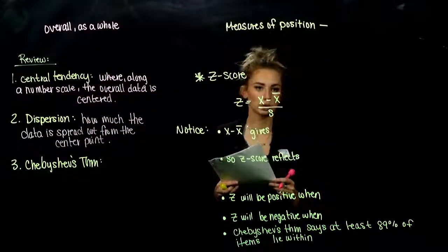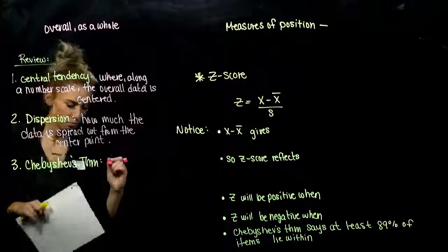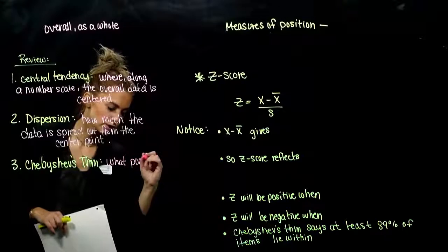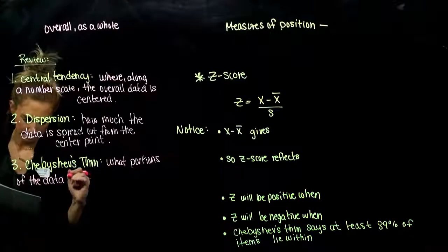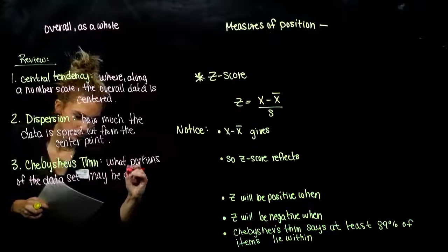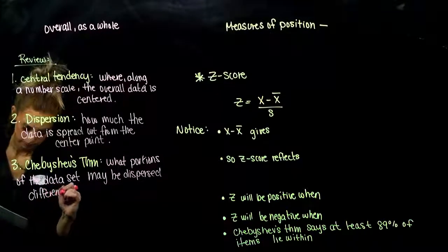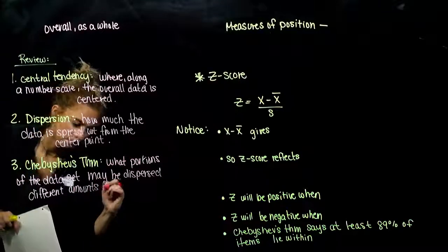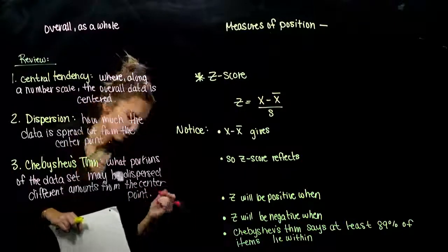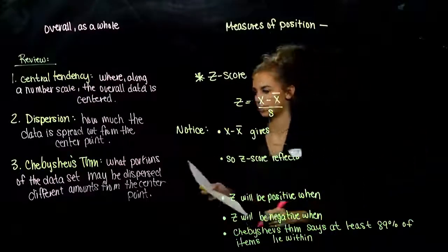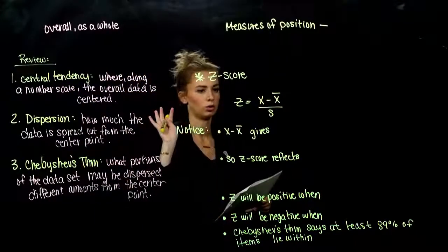Chebyshev's theorem told us how much data can actually fit within a certain number of standard deviations from the mean — what portions of the data set may be dispersed different amounts from the mean, or from any center point. We usually stick with the mean, but we still have those other ways of talking about central tendency. These are all talking about the data set overall as a whole.